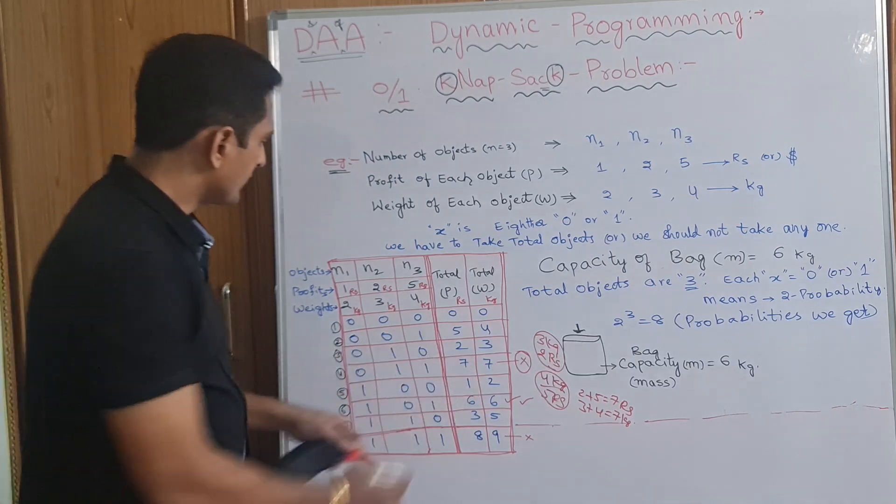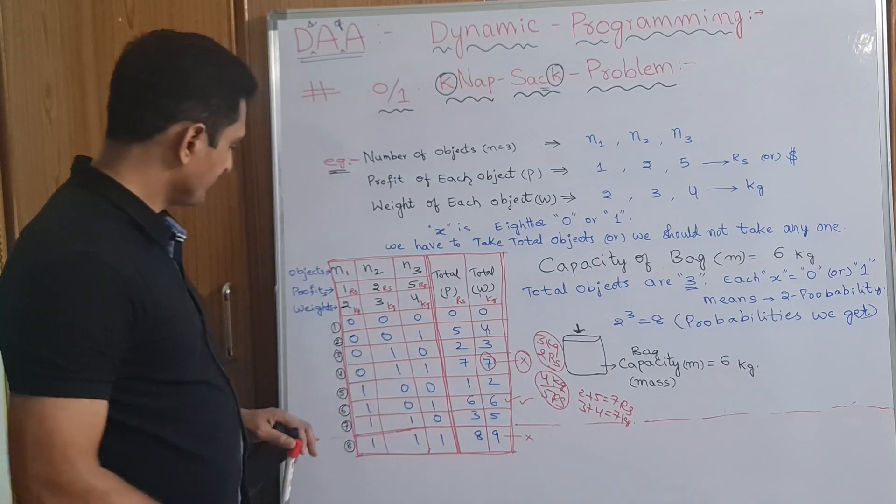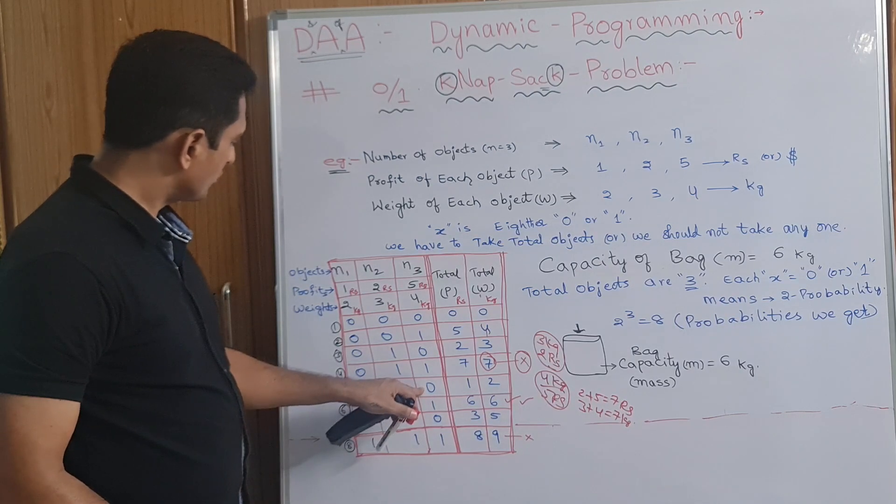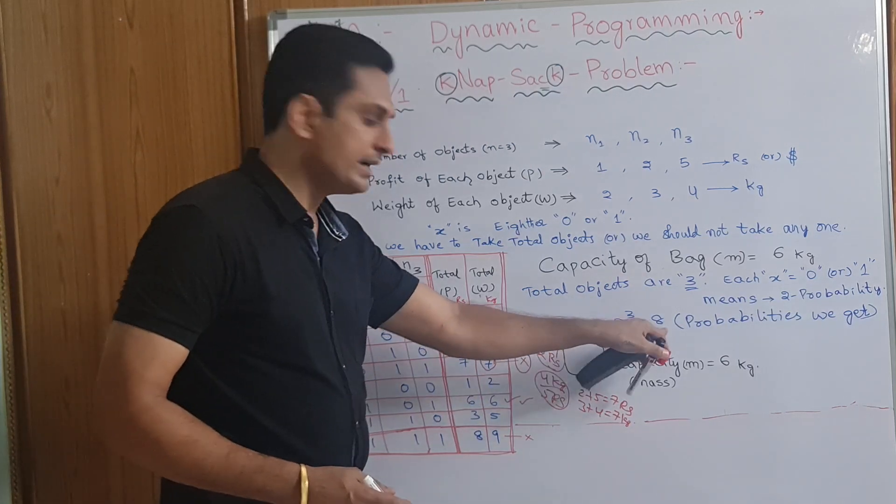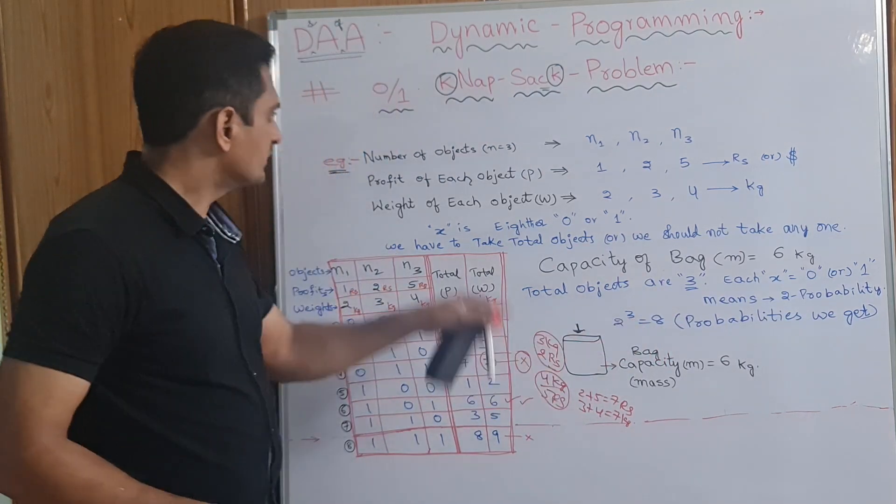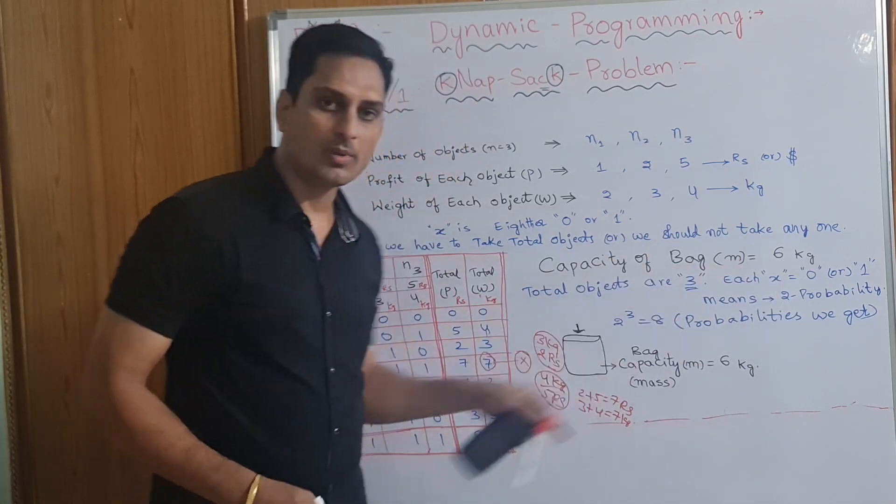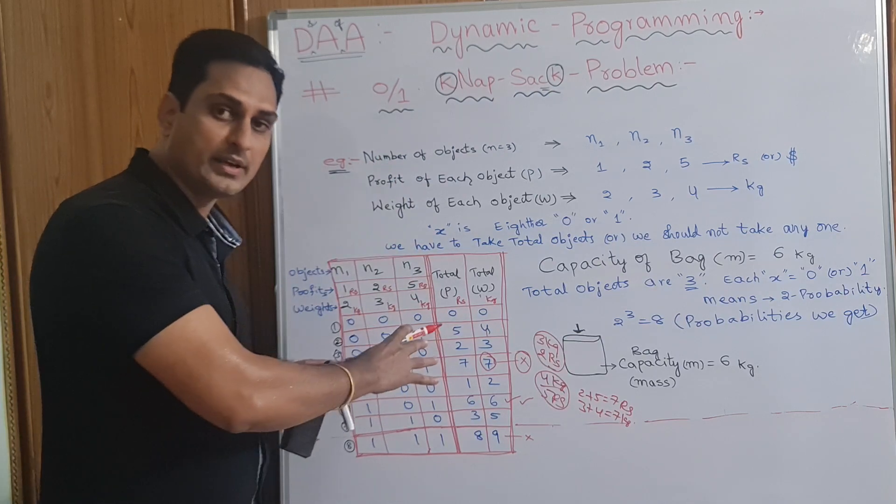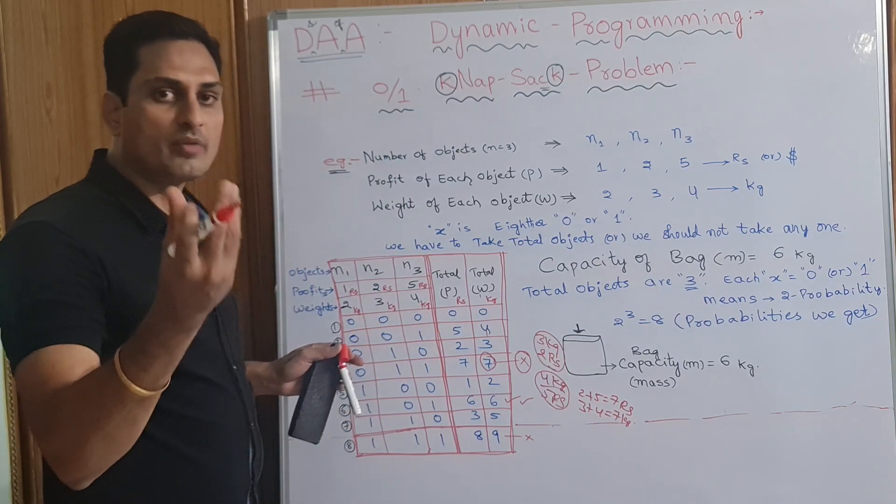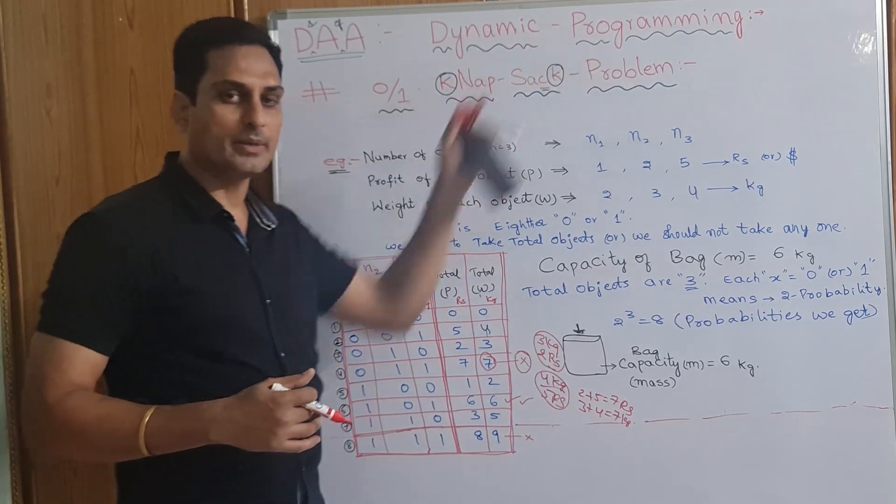So, this is 7. Total weight here 7. This cannot be happened. Here, 1, 0, 0. Next, fifth probability. We have 2 power 3 probabilities. 8 probabilities. When we have 3 objects and 2 probabilities. 2 power 3, 8 probabilities. We can fill. Bag can be filled in 8 ways. Out of this 8 ways, which one we will get more profit. That we will be taking. Maximization problem. Dynamic problem.